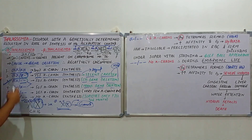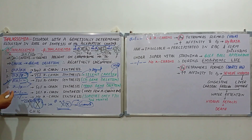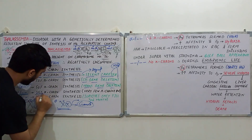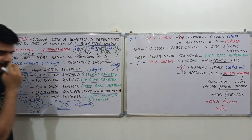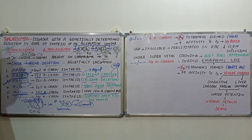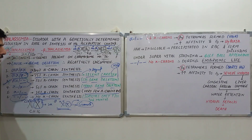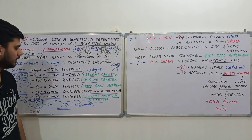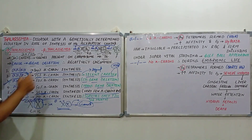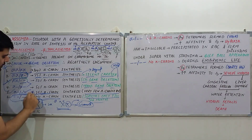In the condition with three gene deletions, only 25% of alpha genes are synthesized, so very few alpha chains are available for hemoglobin formation. In the final condition, all four genes are absent, so there is no alpha chain synthesis at all, and the fetus does not survive beyond three months. We will discuss the pathology of only these last two cases, as the others are either asymptomatic or mildly symptomatic.